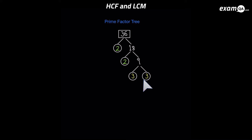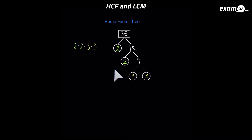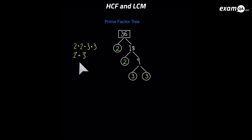Next, we list the numbers we've circled. In total, we've got two twos and two threes, so: two times two times three times three. If you multiply them together it should make 36. You can also write it in index form: two squared times three squared. These are the prime factors of 36.